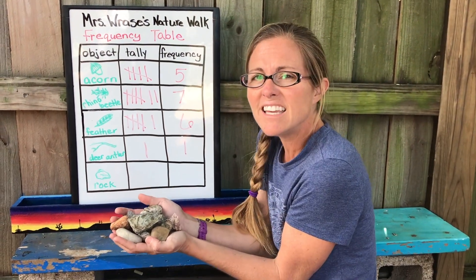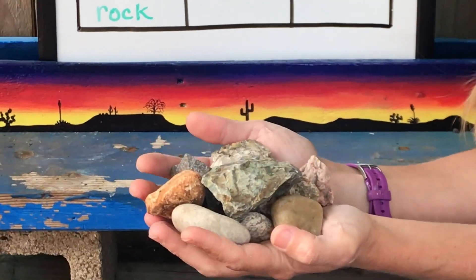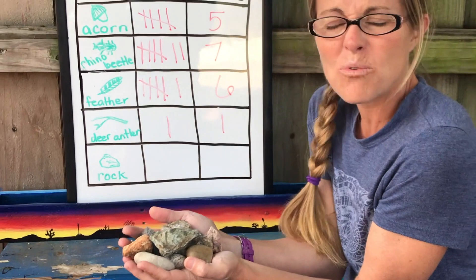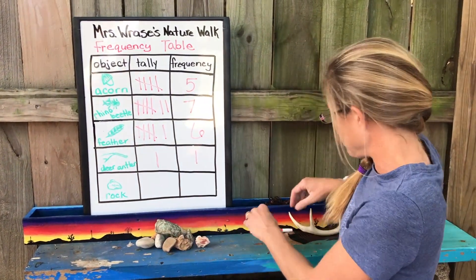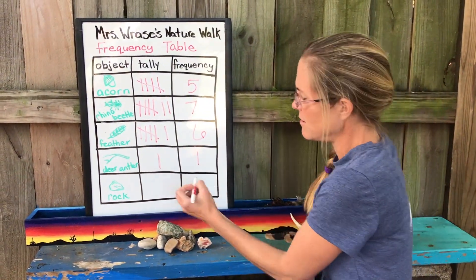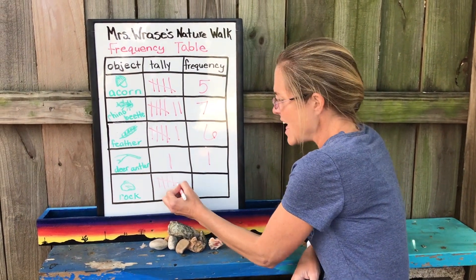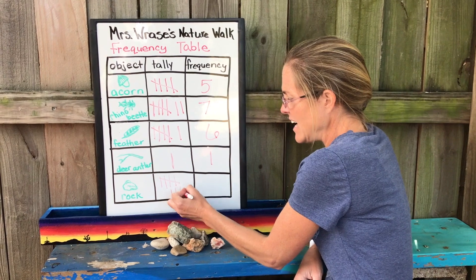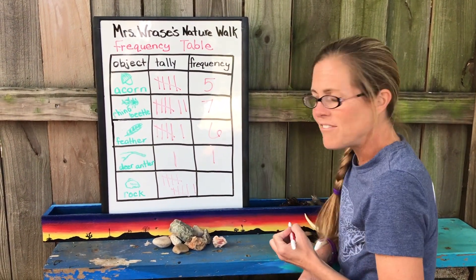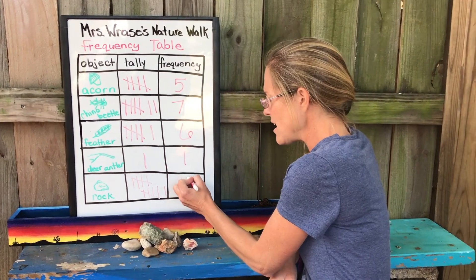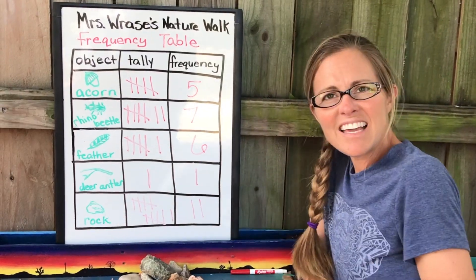And finally, we have rocks galore — we have 11 in all, and I can't wait to study more about these. So marking 11 is gonna be a big number right there for us. One, two, three, four — five is my slash — six, seven, eight, nine — ten is my slash — and one more makes 11, with a frequency of 11 in all.